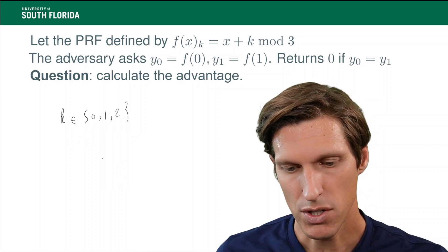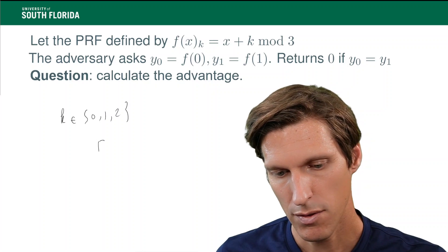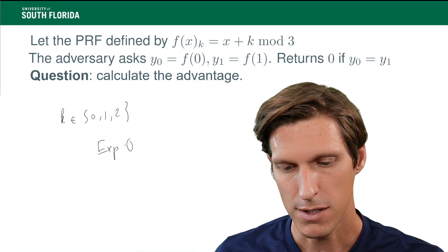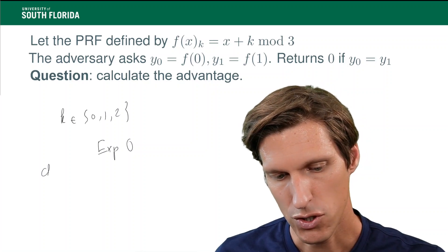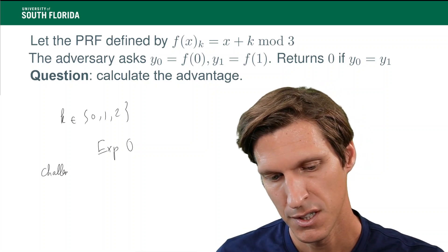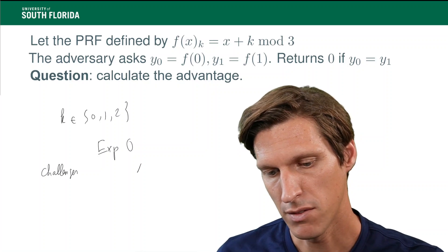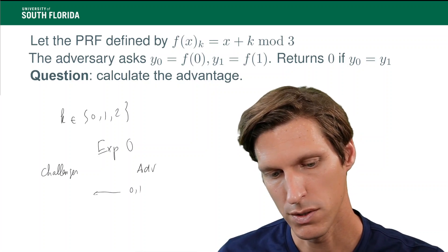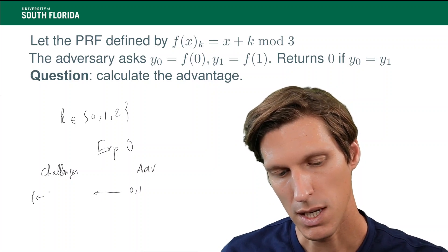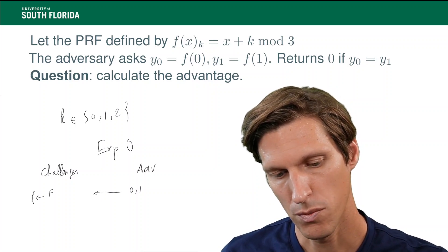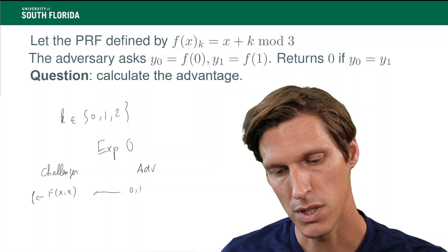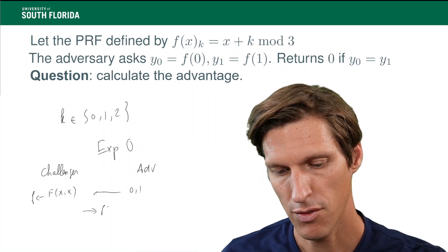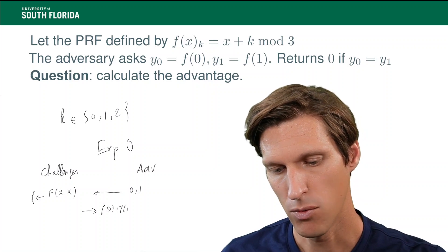So, in experiment 0, remember, what I have is the following. I have my challenger and my adversary, and my adversary sends 0 and 1 to the challenger. The challenger draws a function uniformly at random from the functions from {0, 1} to {0, 1}, and then returns f of 0 and f of 1.